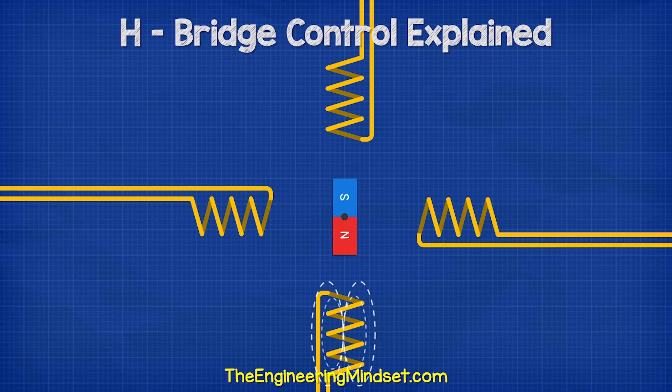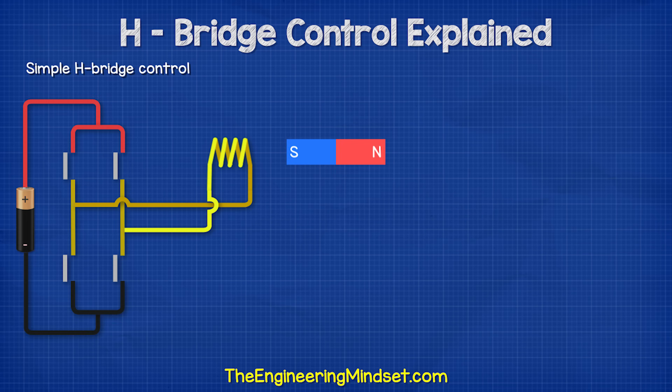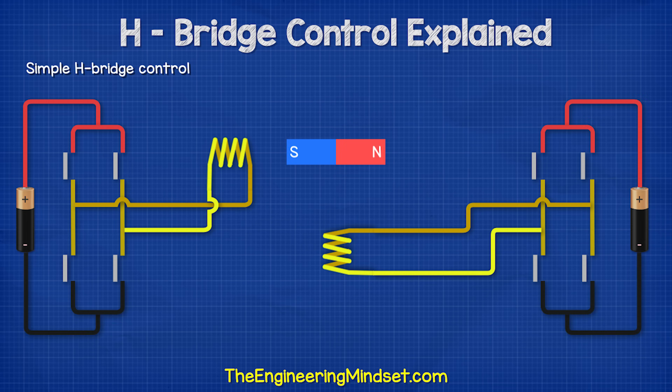The more coils we use, the more precise the rotation. A simple way to control the coils is with an H-bridge. If we imagine the motor has two coils and each coil is connected to four switches,